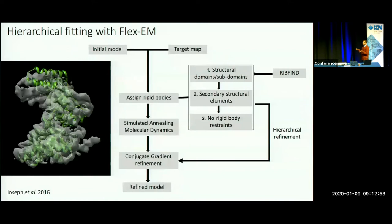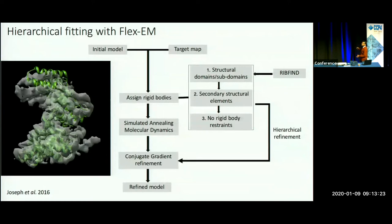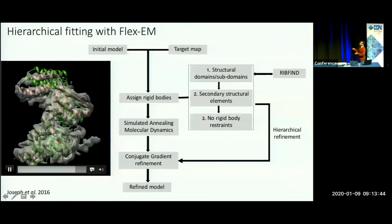Ideally FlexiM works best if you use it in a hierarchical way. To induce large body motions, we start with larger rigid bodies, then hierarchically go to smaller and smaller rigid bodies in different stages of FlexiM. You can use RIPFIND with different cluster cutoffs to get different sized rigid bodies. At each stage you start with larger domains, do a FlexiM run, then follow it with finer rigid body refinement. This helps to bring in large body movements initially and then does fine secondary structure fitting afterwards.